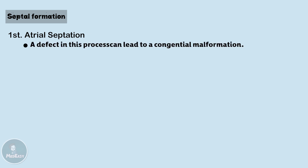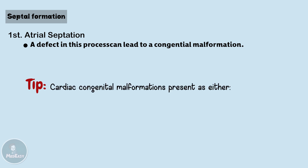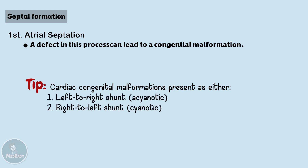A defect in this process can lead to a congenital malformation. It will be useful for our future discussions regarding congenital cardiac malformations to talk briefly about the clinical presentation of these malformations. Any cardiac congenital malformation can present as either one of three things: first, left-to-right shunt; second, right-to-left shunt; and third, obstruction.